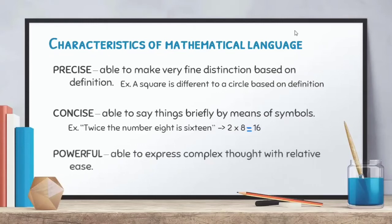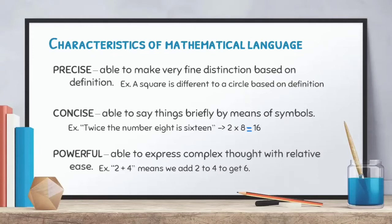Lastly, mathematical language is powerful — able to express complex thoughts with relative ease. For example, 2 + 4 means we add 2 to 4 and get 6. Whenever you see symbols commonly used in mathematics, you already have the power to give your solution or answer to a given problem. So again, the three characteristics of mathematical language are: precise, concise, and powerful — remember PCP.